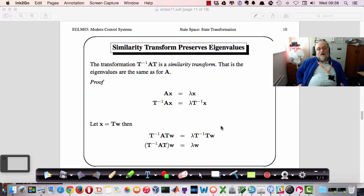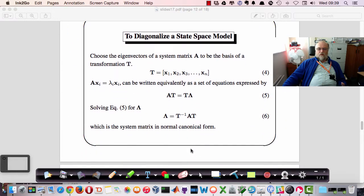T minus 1 AT is called similarity transform, and it's called that because the eigenvalues are preserved through the transform, which you can prove by showing this: Ax is lambda x. So T minus 1 Ax is lambda T minus 1 of x. And then if x is Tw, then T minus 1 ATw is equal to lambda T minus 1 Tw. T minus 1 Tw is just unity because this is just effectively T divided by T. So this becomes unity, so T minus 1 ATw is equal to lambda w. So we have the same set of eigenvalues. The eigenvalues themselves do not change by using this operation. And that's a useful, as I said, a useful property.